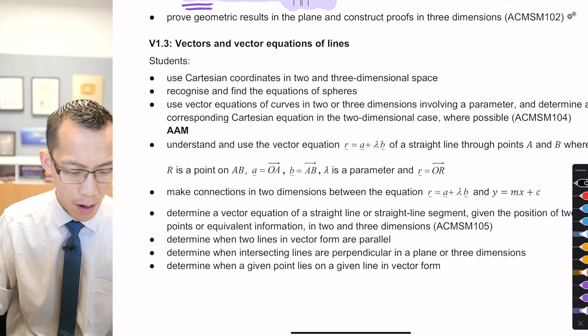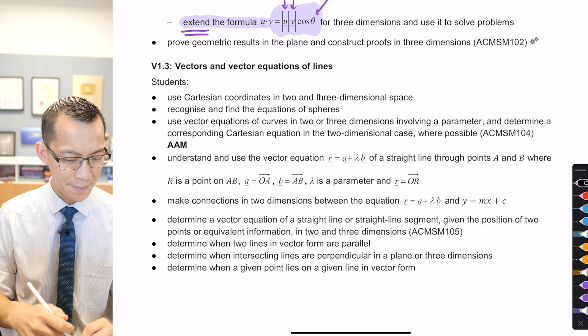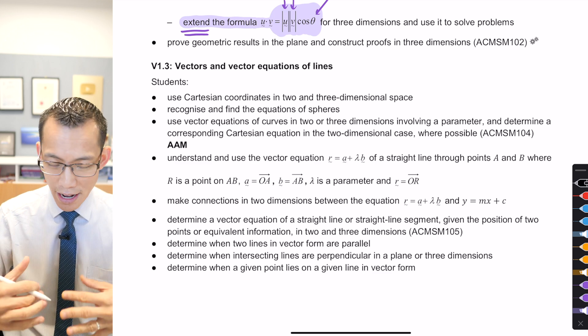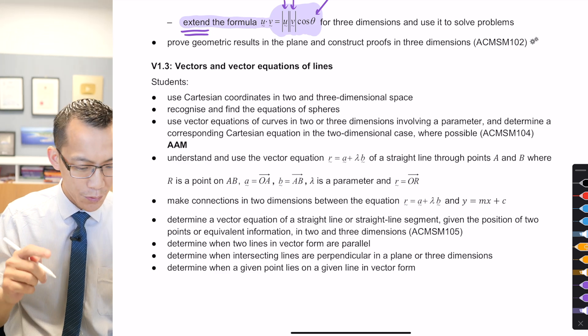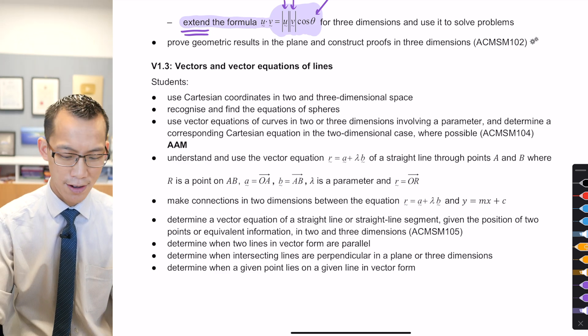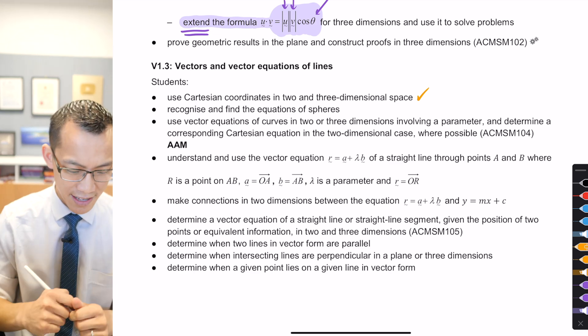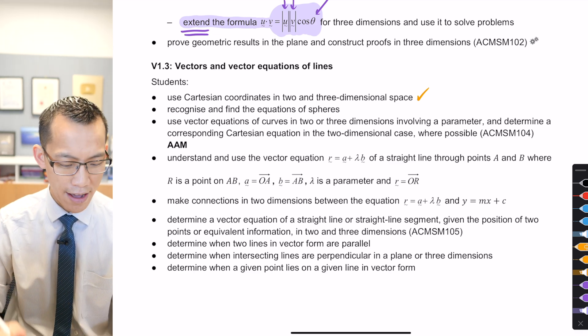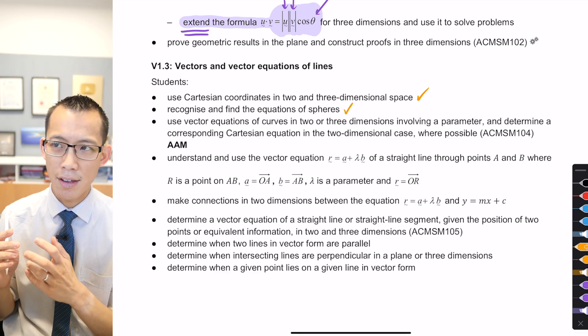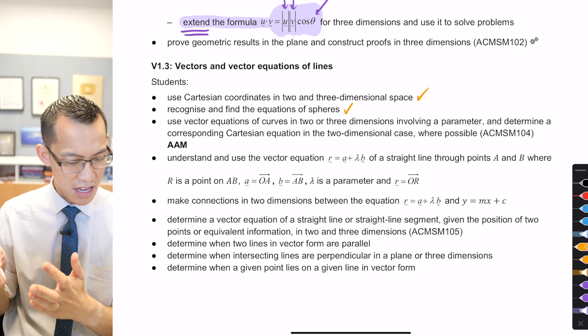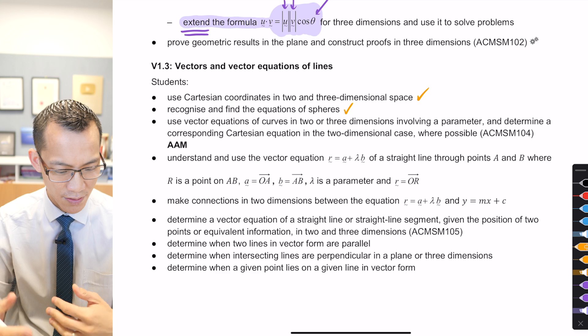So let's just review and see what we're up to in this v1.3 section of three-dimensional vectors. So what have we done here? Well, so far we have used Cartesian coordinates in two and three-dimensional space, yes, absolutely. Just last lesson on Wednesday, we recognized and we found the equations of spheres, which if you use a vector equation, the vector equation of a sphere is the same as the vector equation of a circle, which is kind of nice, it extends very easily.